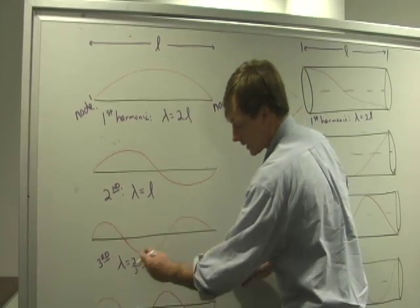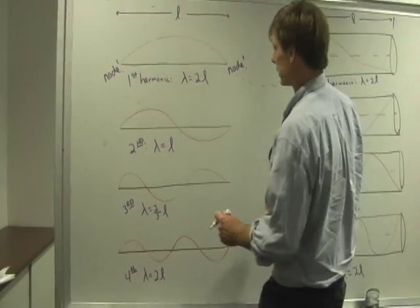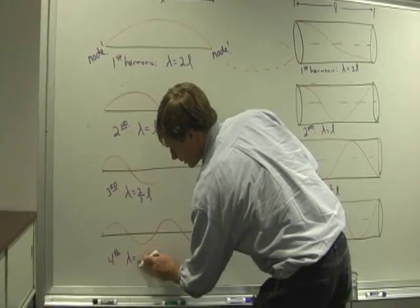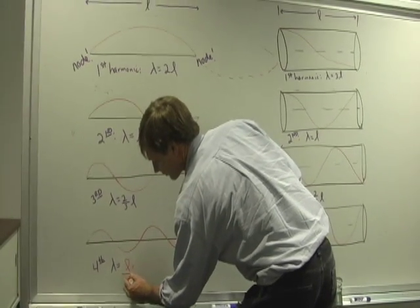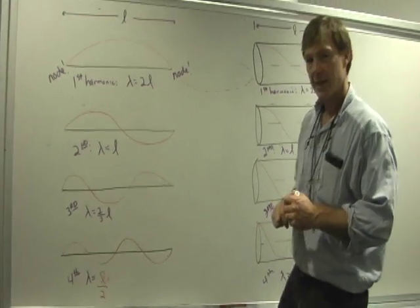And finally, I get another node in. And then my wavelength is going to be half the distance between my hands, L over two.